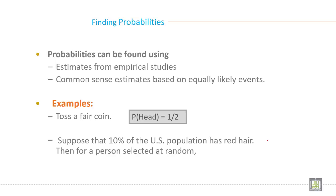Suppose that 10% of the US population has red hair. Then for a person selected at random, probability of red hair equals 0.10.